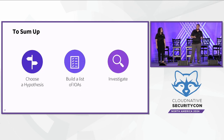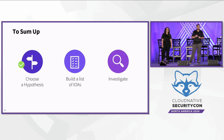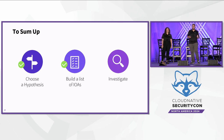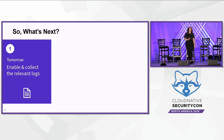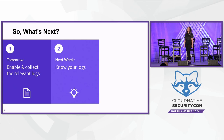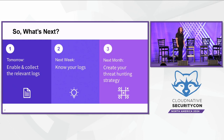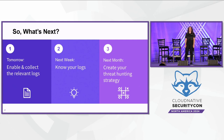Let's summarize our threat hunt. We chose a concrete hypothesis — an EKS cluster and a threat actor that gained persistence to our cluster and is using it as an access enabler to our sensitive bucket. We built a list of potential indicators of attack and understood how to find them in the relevant logs. What remains is to take the results of the queries and investigate them. So what's next? Tomorrow, start by enabling and collecting all the relevant logs — your Kubernetes logs and your cloud provider logs. Next week, start getting to know your logs by exploring them and finding out the relevant fields. And next month, start building your threat hunting strategy: map out your important clusters, choose the relevant scenarios, and decide on a schedule to perform it.